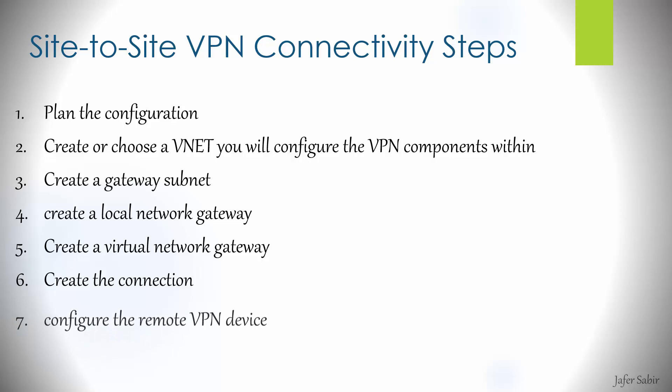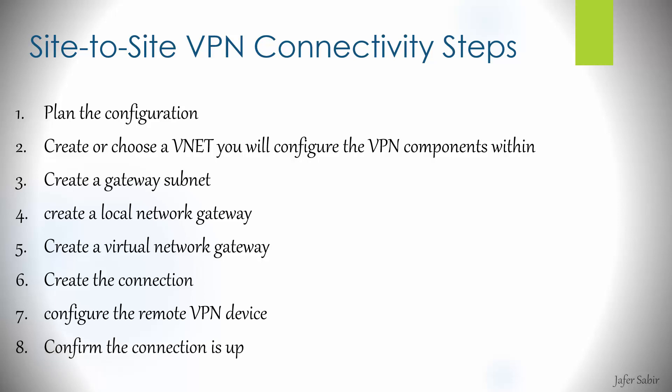In step 7, we would configure the remote end of the VPN device — in my case the Palo Alto Networks firewall. I will not be doing that in this video, but I will be doing a separate video on the Palo Alto firewall configuration. Finally in step 8, we would test everything and confirm the connection is up. Now we can jump onto the Azure portal and look at the Azure VPN configuration itself.